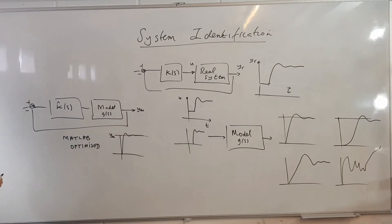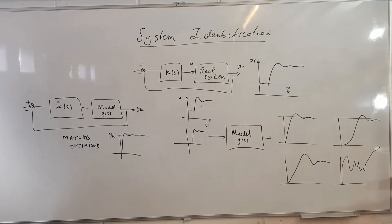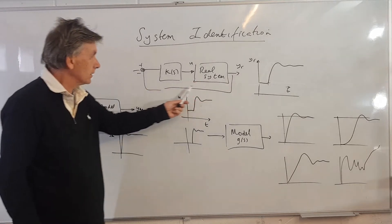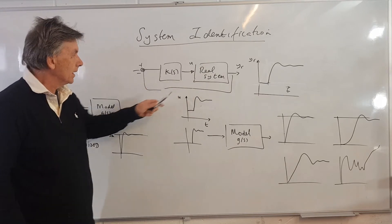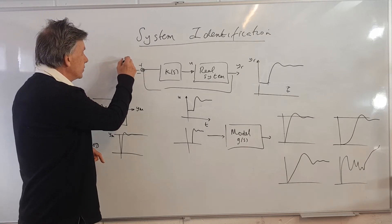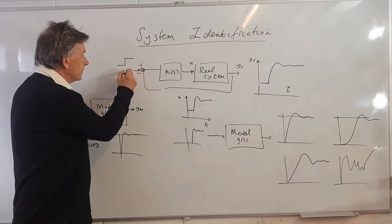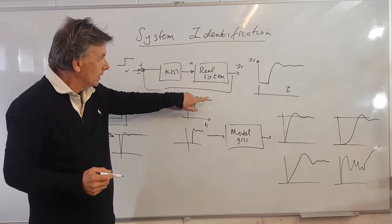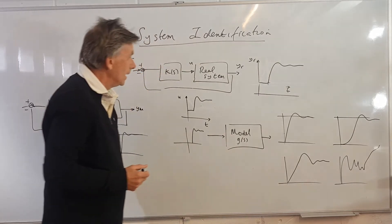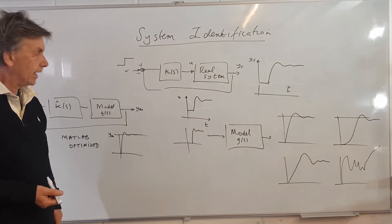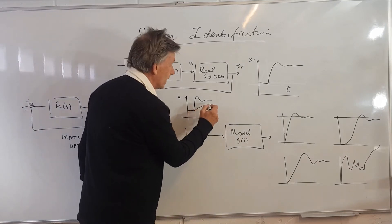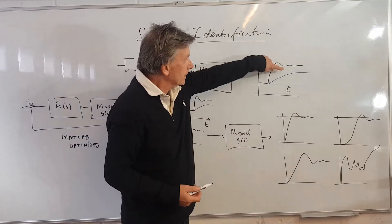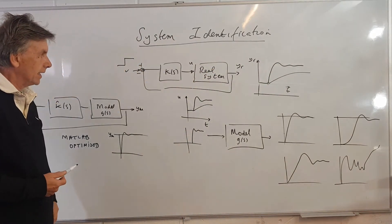I thought we'd just do a bit of a recap of some of the key concepts behind system identification — what could go right and what could go wrong. We have a real control system running with a controller. We arrange a set point change at input V, which runs through the control system and generates a control input U, which then generates output Y. We need to make sure there's sufficient excitation — we need a good exciting signal to excite all the modes inside the system.